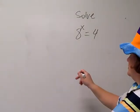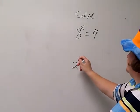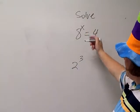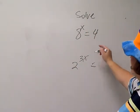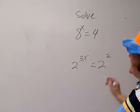It's going to be 2. Okay, 8 is the same as 2 cubed, and then it still has that x up there. 4 is the same as 2 squared.